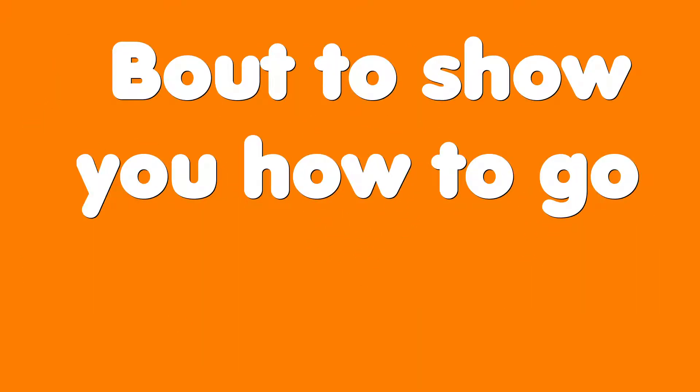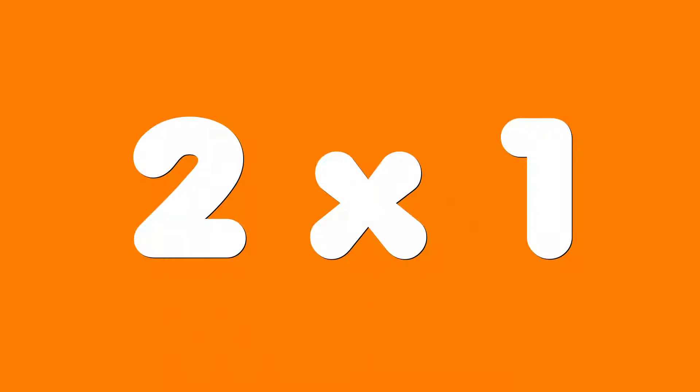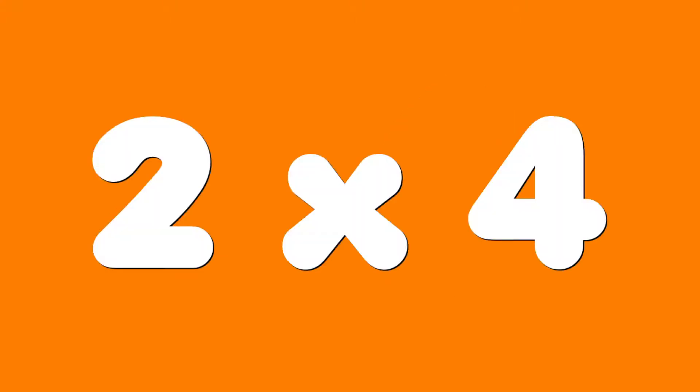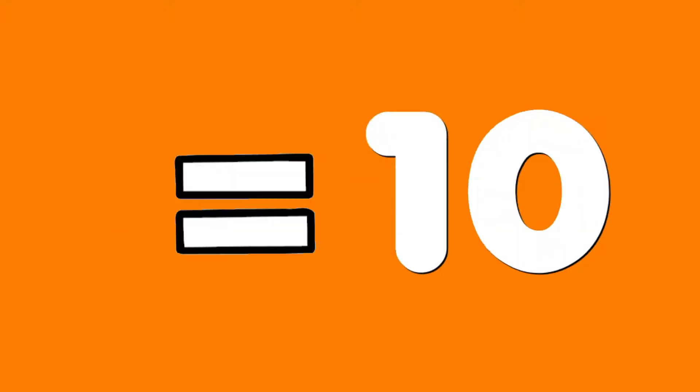About to show you how to go by twos. Two times one equals two, two times two equals four, know that. Two times three equals six for me, and two times four equals eight for free. Two times five puts ten aside — that's two times one through five.